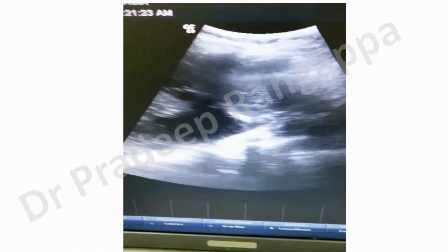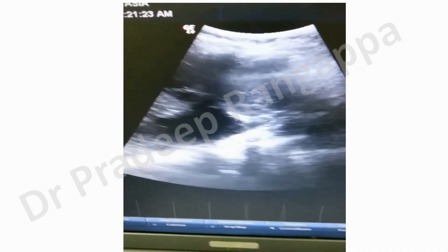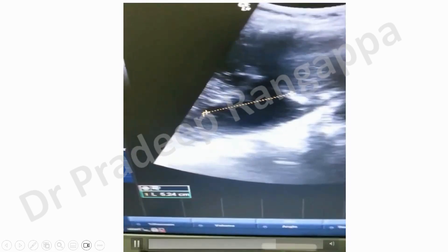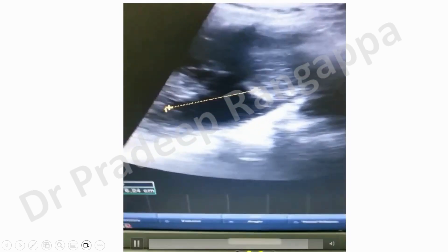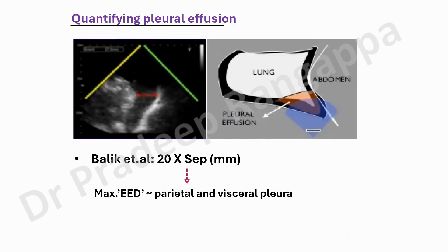You can measure and quantify pleural fluid in the ICU. Using the Balik et al. formula, you multiply 20 by the maximum separation distance in millimeters to quantify the pleural fluid volume. If it is less than 70 mm, it is approximately 340 ml. You take the measurement and multiply it by 20 to assess whether it is drainable to correct hypoxemia.